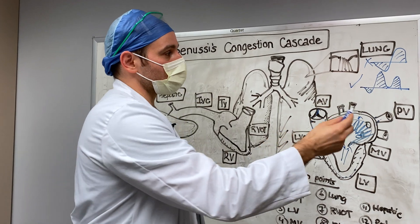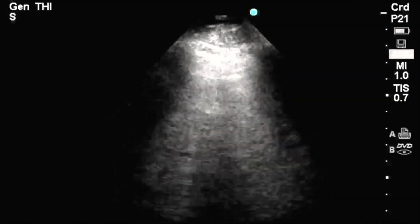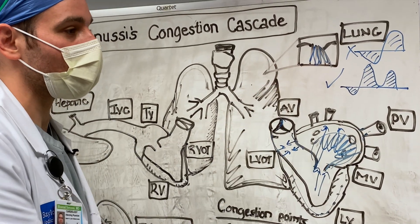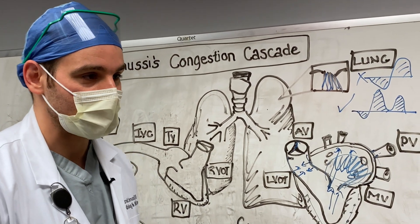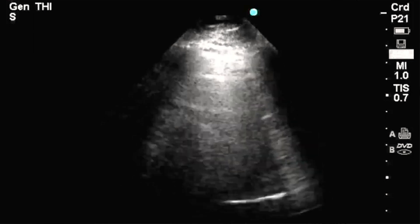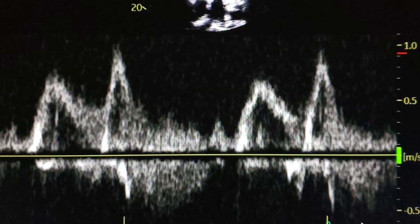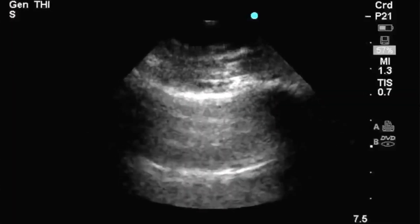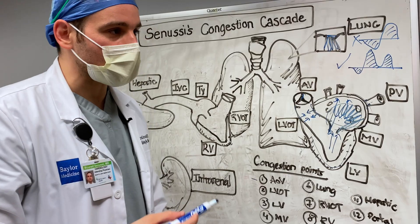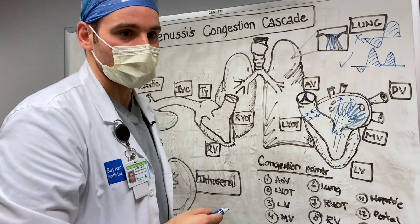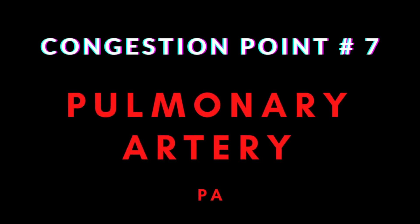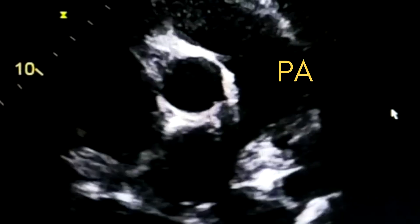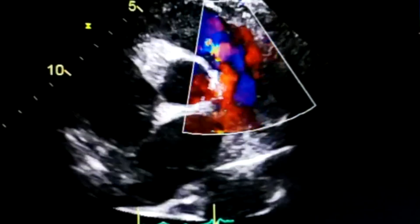Next stop is lung ultrasonography — assessing whether the patient has B-lines. However, B-lines must be assessed in concordance with left-sided filling pressures. Two patients can both have a bilateral B-line pattern: one with evidence of high left-sided filling pressures has cardiogenic pulmonary edema; the other does not. Regarding the pulmonary artery, using color flow Doppler at the bifurcation, you can detect proximal large saddle embolisms — a critical finding in the congestion cascade, leading to a different treatment pathway such as TPA or catheter-directed thrombolytics.